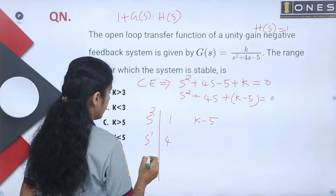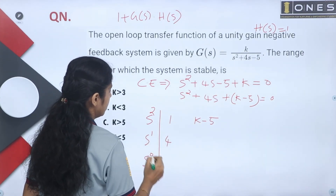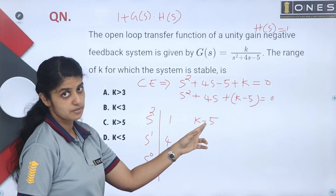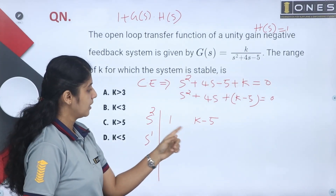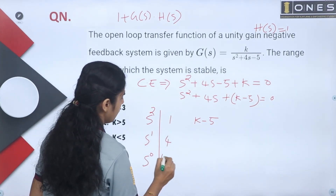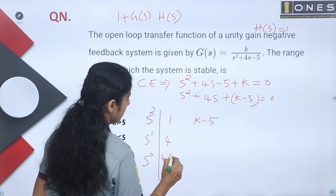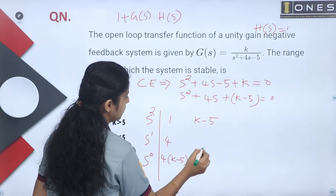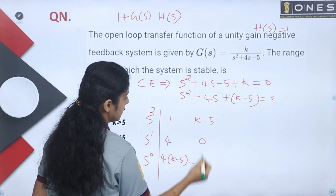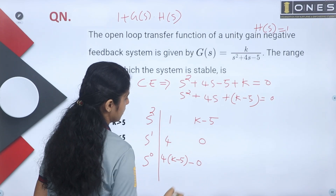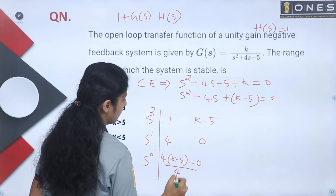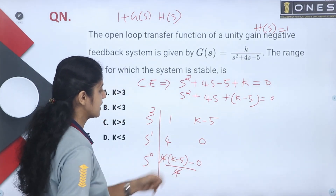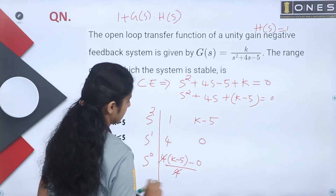The rest of the Routh table term is computed as: 4 times (k minus 5) minus 1 times 0, all divided by 4. The 4s cancel, giving k minus 5.